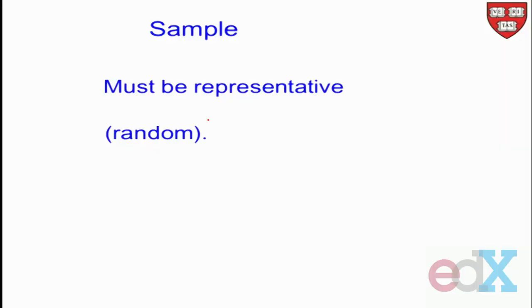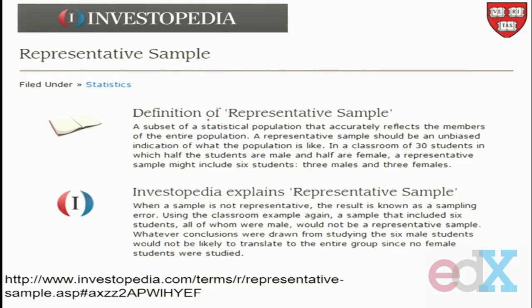Let's return to this slide about the sample. We said the sample must be representative, and we said, well, what does that really mean? What we're going to do is replace that with randomness. But what does representative mean? Because intuitively, you think this is exactly what you want. So I went onto the web and found Investopedia, and they define what they mean by a representative sample.